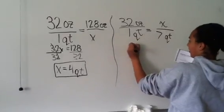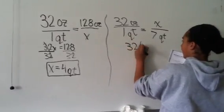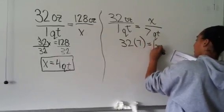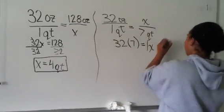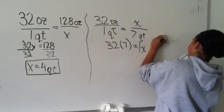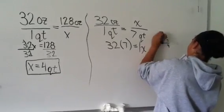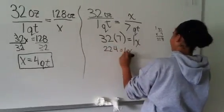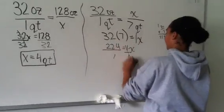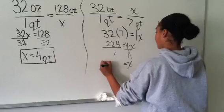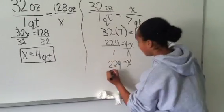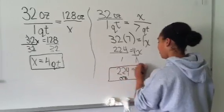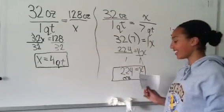And 32 times 7 equals 1X, and 32 times 7 equals 224. So it's 224 ounces equals X. Thank you very much.